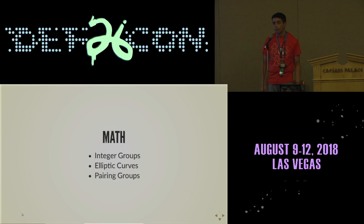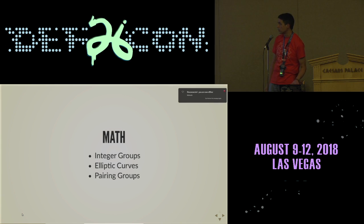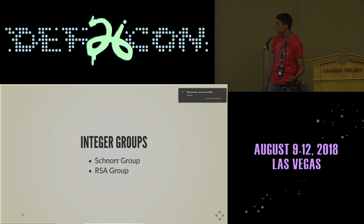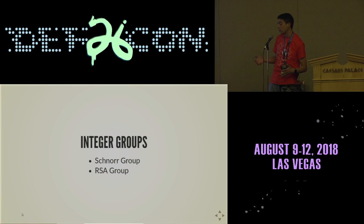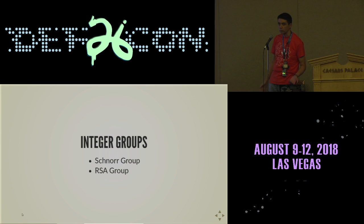As far as math is concerned, some core mathematical objects are integer groups, elliptic curve groups, and pairing groups. For integer groups, there are Schnorr groups and RSA groups. Schnorr groups are used for discrete log-based cryptosystems — they have the property of being a multiplicative group with a large prime order subgroup of a prime field. RSA groups are the groups used for RSA and other cryptosystems that use the same group structure.